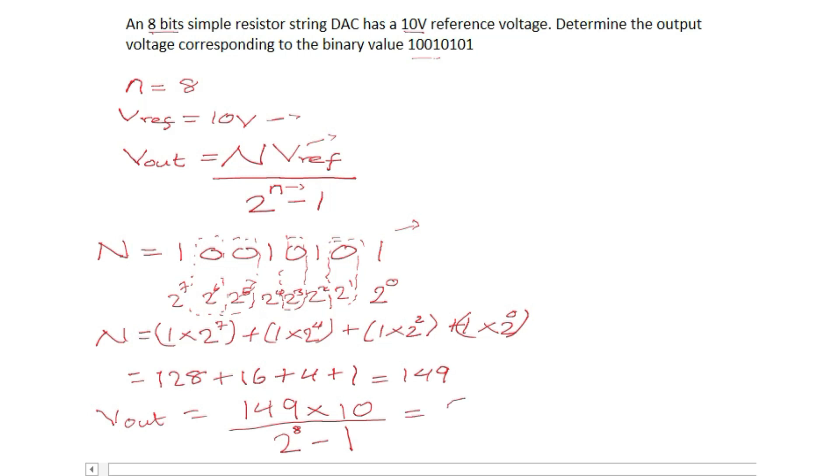So we have our output voltage. I hope with this you have understood how to calculate or how to get the output voltage in a simple resistor string DAC. I hope you liked the video. Thank you, thank you, see you in the next class.